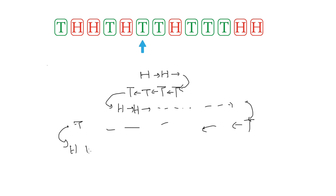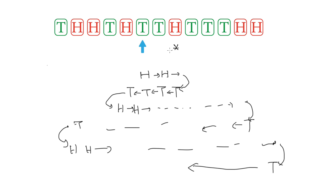So the important coins are those who change the direction of the moving flow. Now let me mark down their positions in order to figure out some useful information. So the first change of direction happens here at this head. Then we move back to the left-hand side until this tail at the fourth position. And then we move forward again until this head. And then all the way back to the first tail. And finally we arrive at the last head and go back to zero.